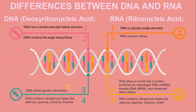Here are the differences between DNA and RNA. DNA — deoxyribonucleic acid — has a double-stranded helical structure, whereas RNA — ribonucleic acid — is typically single-stranded. DNA contains the sugar deoxyribose, whereas RNA contains ribose. DNA stores genetic information, whereas RNA plays a crucial role in protein synthesis as messenger RNA (mRNA), transfer RNA (tRNA), and ribosomal RNA (rRNA).